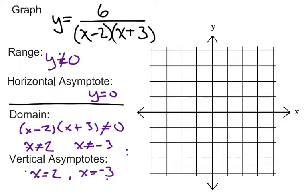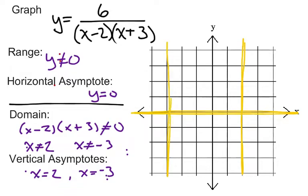So let's quickly plot those asymptotes so we can start getting an idea of what our graph will look like. Horizontally, our asymptote is y equals 0, which is just the x-axis. And then the vertical asymptotes are at x equals 2 and x equals negative 3.